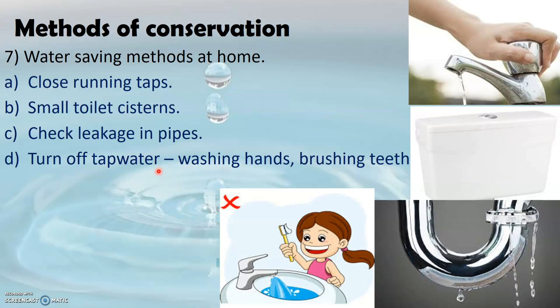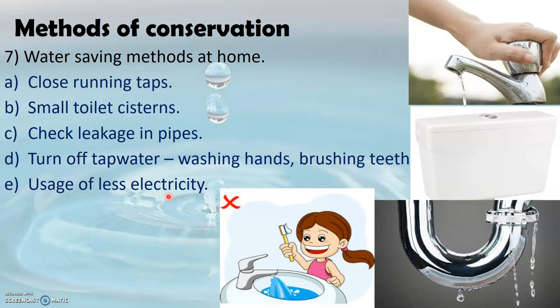The last method by which we can conserve water is less usage of electricity. In power plants where electricity is produced, a lot of water is also required. So using less electricity will indirectly help in conserving water. These are the different methods that we can adopt to prevent wastage of water.